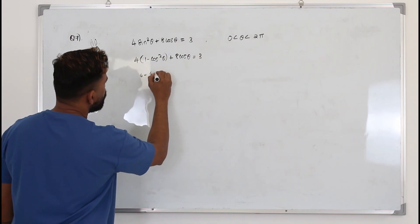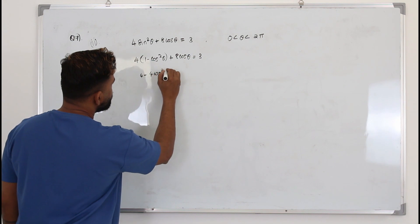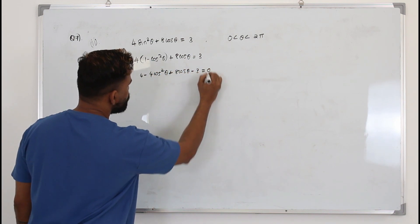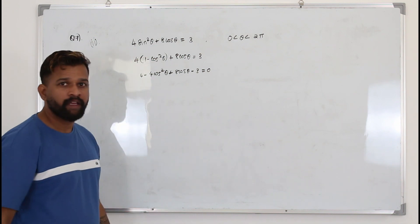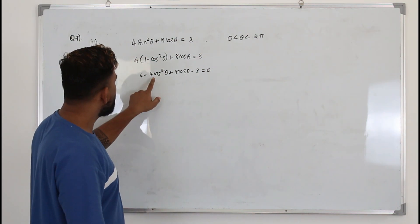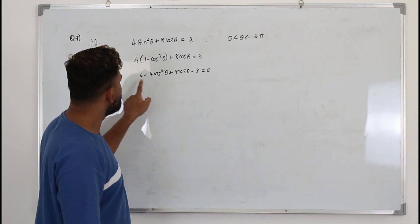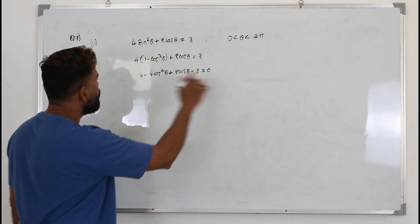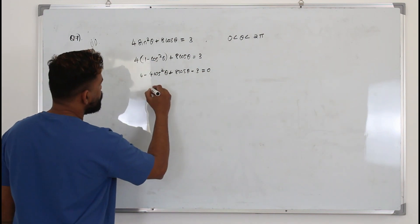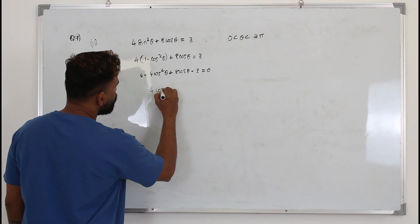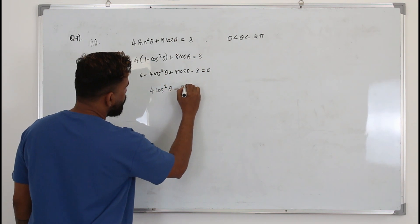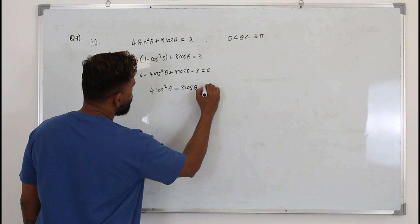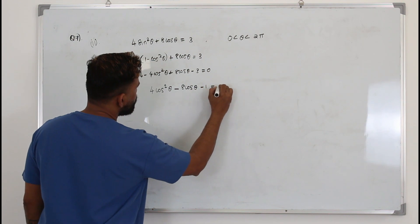Now expand this: 4 minus 4 cos squared theta plus 8 cos theta minus 3 equals 0. Simplifying, you get minus 4 cos squared theta plus 8 cos theta plus 1 equals 0. Multiply everything by negative 1, so you have 4 cos squared theta minus 8 cos theta minus 1 equals 0.